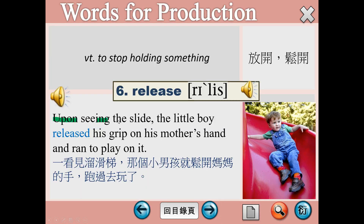Number 6，release，放開、鬆開。Upon seeing the slide, the little boy released his grip on his mother's hand and ran to play on it. Upon放在句首加V-I-N-G使用的時候，後面再接一個子句，這個時候的upon就是as soon as的意思，一怎麼樣就怎麼樣。但upon是介系詞的用法，所以後面直接接動名詞。這樣的用法有一個限制，就是原本這個動作的主詞，必須跟另外一個子句的主詞是一樣的。